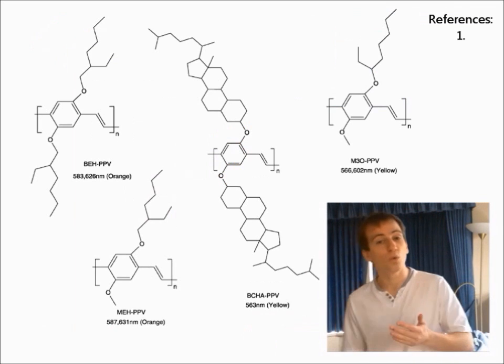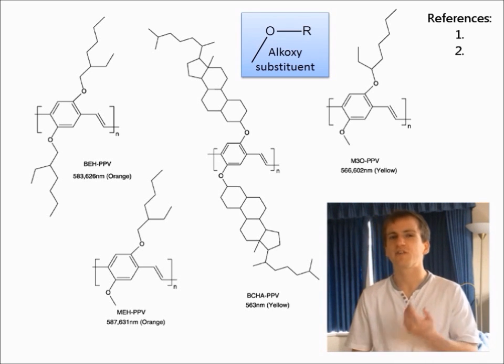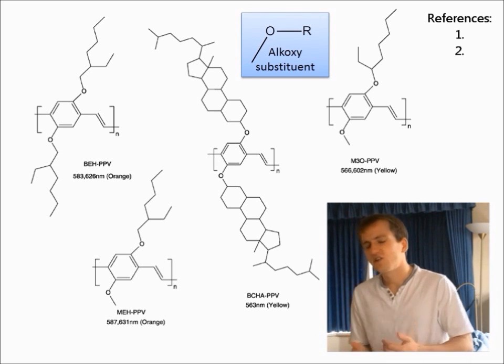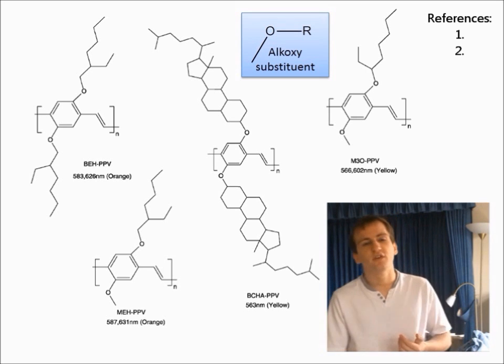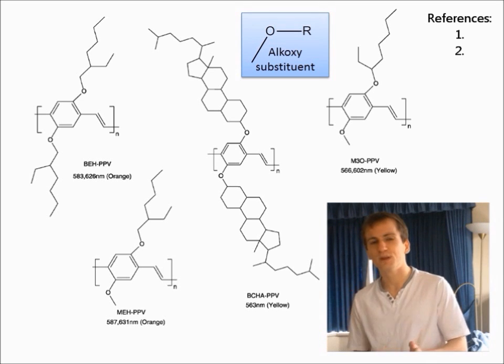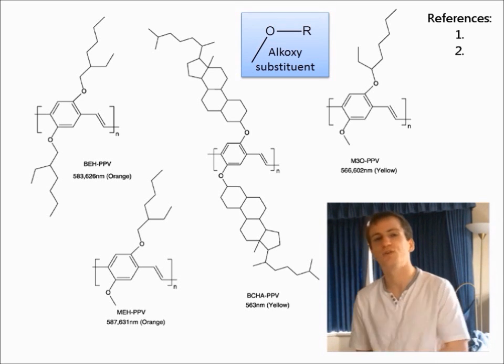Adding substituents will also alter other properties of the polymer, such as electrical conductivity. Having alkoxy substituents will increase the conductivity of the polymer, because it makes the polymer easier to oxidize. Having long side-chain substituents, however, will lower the conductivity of the polymer, because the side-chains make packing of the polymer a lot more difficult, which means charges will find it a lot harder to hop from polymer chain to polymer chain.